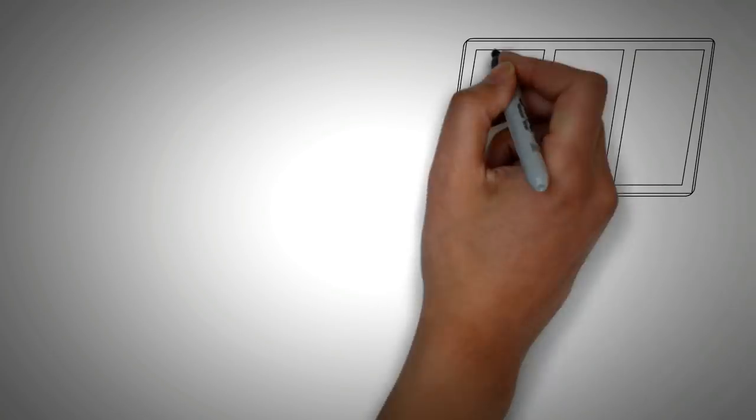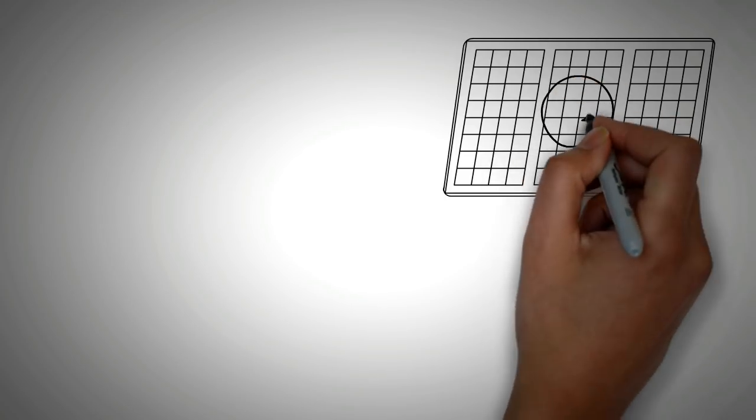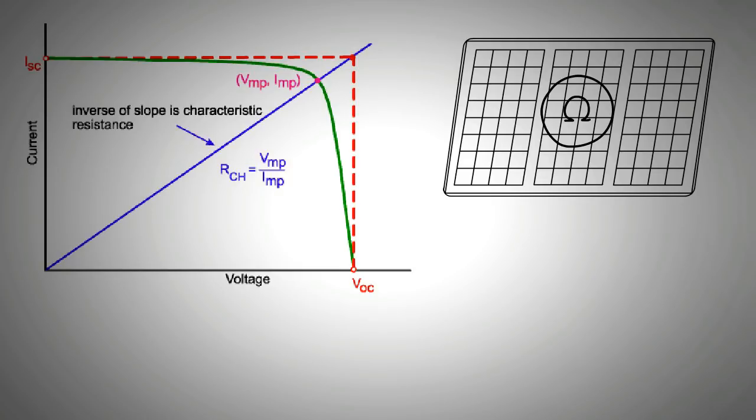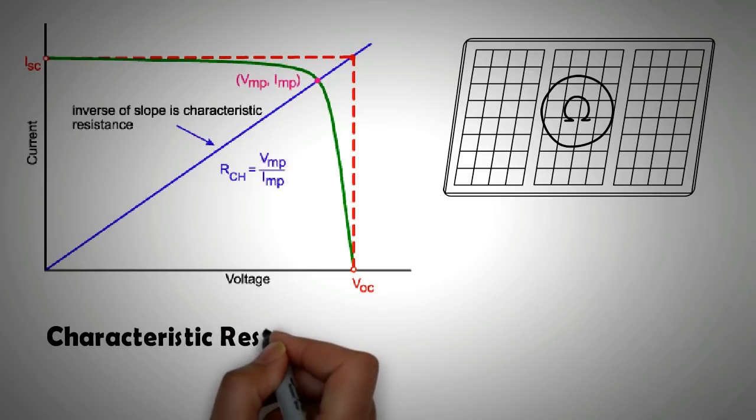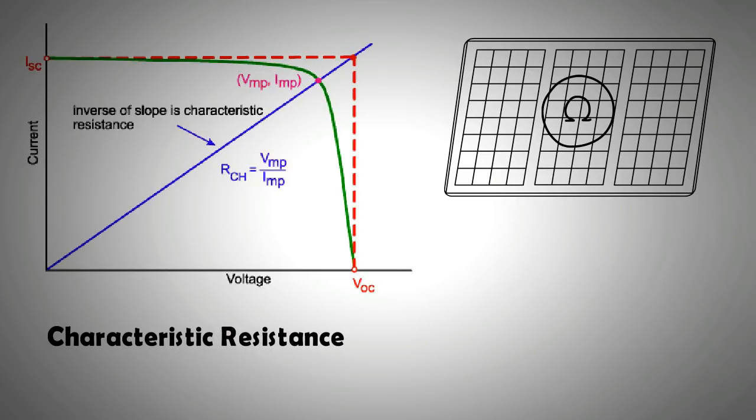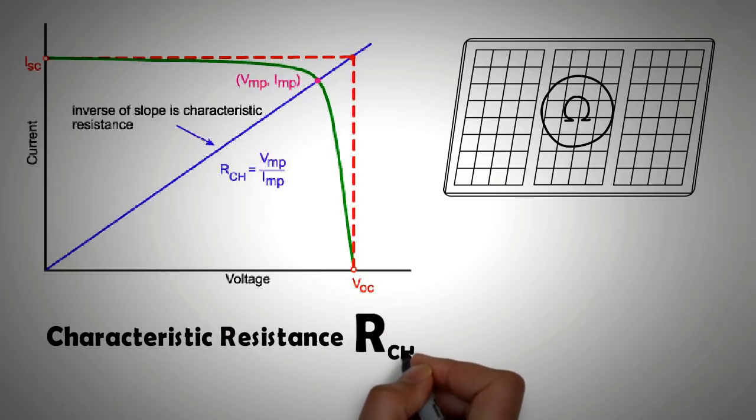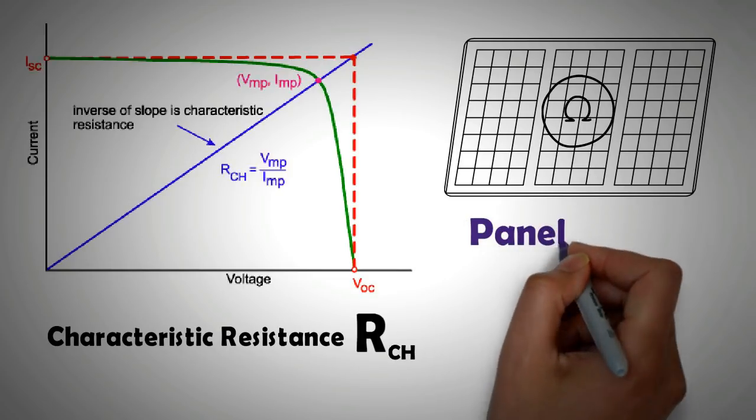Let's explain this further. Every solar panel has its own internal resistance which varies with the output power. When the solar panel is generating peak power, the internal resistance at this point is termed as the characteristic resistance of the panel. Now when you connect the solar panel to the load, the closer the internal resistance of the load is to the characteristic resistance of the panel, the more power can be extracted from the panel.